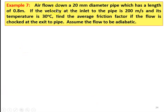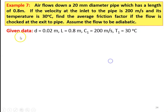Example number 7. Air flows down a 20 millimeter diameter pipe which has a length of 0.8 meter. If the velocity at the inlet to the pipe is 200 meters per second and its temperature is 30 degree Celsius, find the average friction factor if the flow is choked at the exit of the pipe. Assume the flow to be adiabatic. Given data: diameter equal to 0.02 meter, length equal to 0.8 meter.